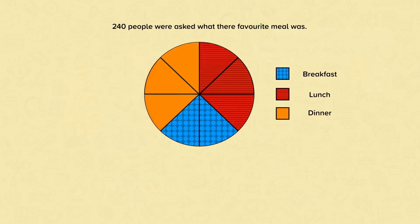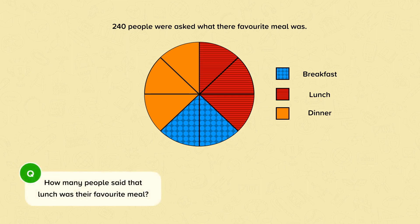Now let's look at another pie chart. Two hundred and forty people were asked what their favourite meal was, and the pie chart shows the results. The question is: how many people said that lunch was their favourite meal? Again, we need to work out how many people are represented by each segment.